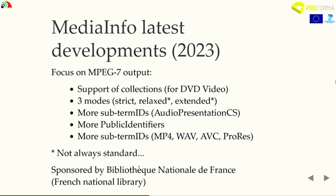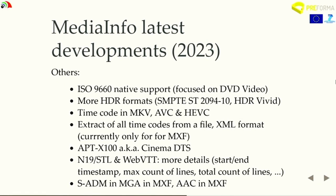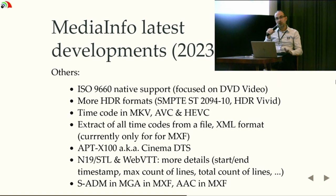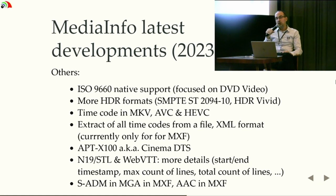We also added ISO support, currently focused on DVD video, sponsored by Bibliothèque Nationale de France with some help from the New York Public Library. We added new HDR format support — more modern formats from SMPTE or from China. HDR Hybrid Log-Gamma for example is a version of HDR where the world still hasn't agreed on one format, so we need to support multiple formats. We also did a focus on timecode in Matroska, for the Library of Congress, and also in AVC and HEVC — timecode that is not supported in FFmpeg but is supported in MediaInfo.